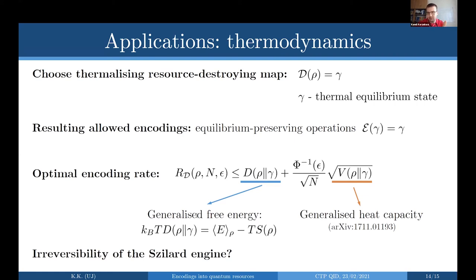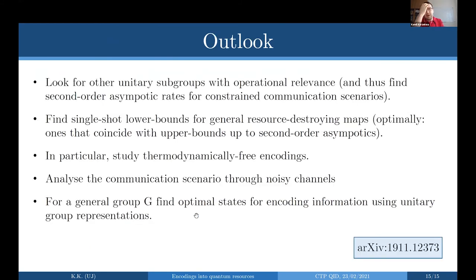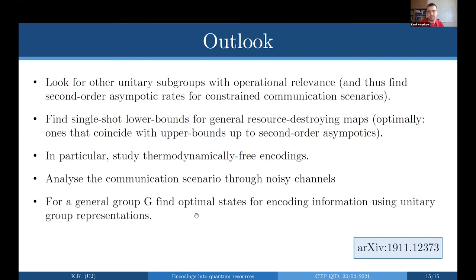Let me go to the outlook. First, the G-twirling framework is flexible — any favorite unitary group can be plugged in to find the optimal communication rate. Second, we want to find single-shot lower bounds for general resource-destroying maps, ideally coinciding with the upper bounds up to second-order asymptotics, as we achieved for G-twirling maps. Third, in particular we would like to study this in the thermodynamically free encoding setting, when the resource-destroying map is a thermalizing map. Fourth, extending to noisy channels: we already handled some cases like partial dephasing and partial G-twirling.